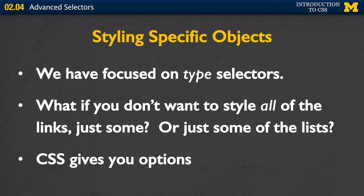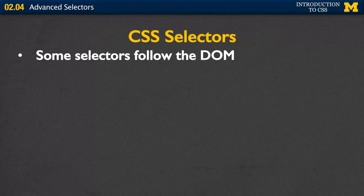CSS is going to give you so many options that in this lecture I'm going to try to cover as many as I can, but it's still going to be up to you to go look up more on your own as you need them. Let's start with CSS selectors that follow the DOM. The document object model is how the browser breaks up your page into a tree-like structure. The browser knows if a paragraph comes directly after an H1 tag, or if two paragraphs are siblings in the same section.